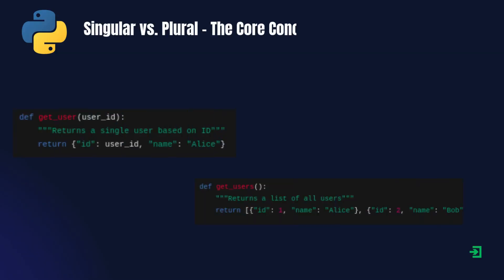In Python, function names should clearly indicate what they return. A function named getUser should return a single user, while getUsers should return multiple users. This small difference makes your code easier to understand and less error prone.